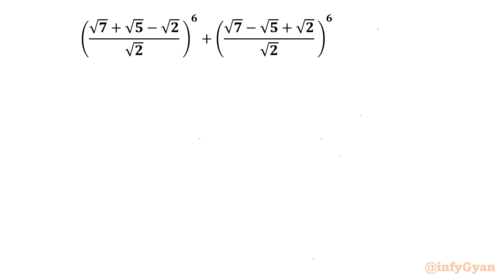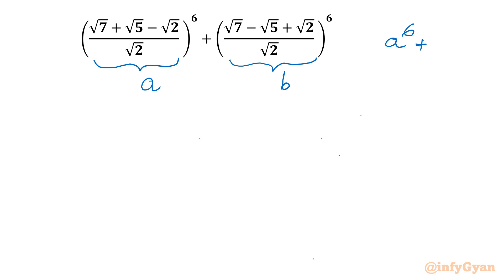Let's get started by considering the first bracket as 'a' and the second bracket as 'b'. So ultimately we are calculating a⁶ + b⁶.